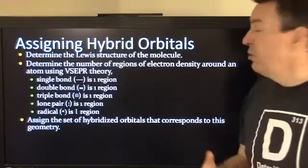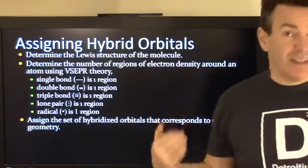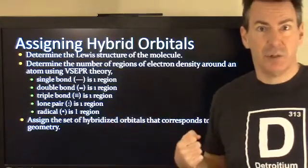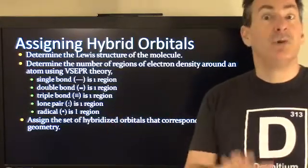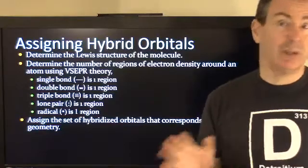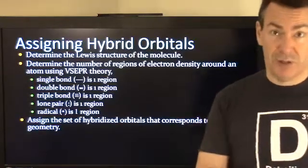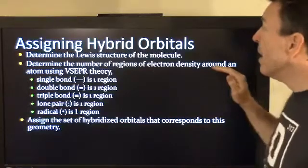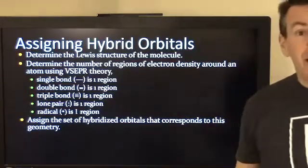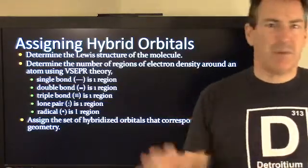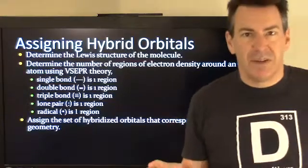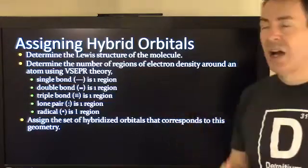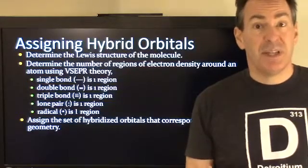To assign hybridization, you're going to determine the Lewis structure of the molecule. In this case, I've already built those, so we're going to be looking at the already existing Lewis structures. Then determine the number of regions or areas of electrons — every textbook calls it something different — but regions of electron density around a particular atom.